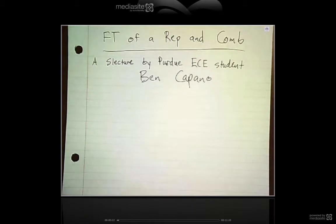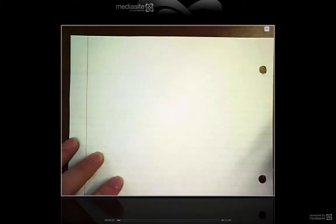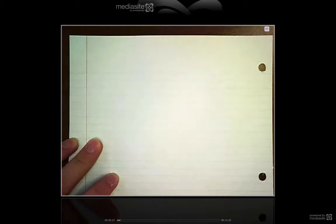Before we get into how to find the Fourier transform of these things, I want to talk about what a rep is defined as and what a comb is defined as. I think about a rep as being the periodic repetition of a signal in the time domain.